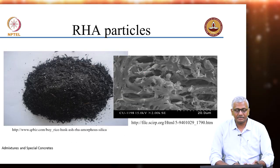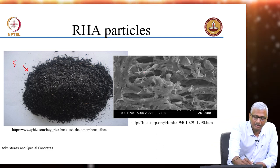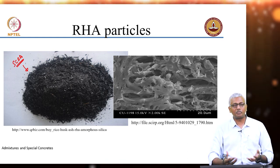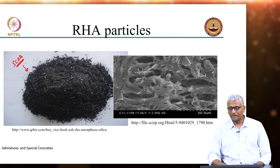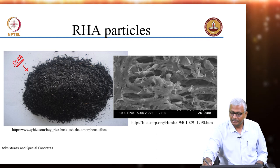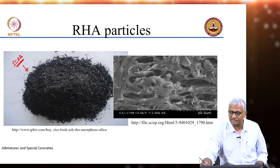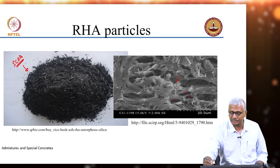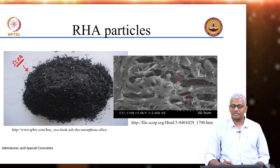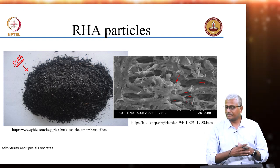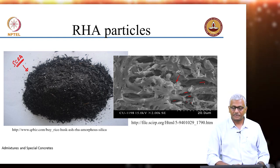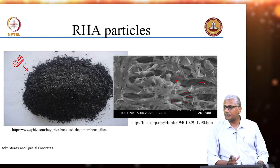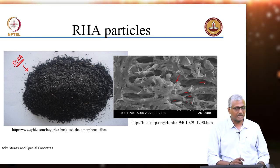You can see the rice husk ash particles. This photograph appears quite similar to bagasse ash — if somebody gave you two samples you probably would not be able to distinguish them easily. But when you start looking at the structure of the particles, at a scale of 20 microns you can see many vesicles and cavities inside — a highly cellular nature. You really do not see a solid particle but a very high surface present in these particles. Rice husk ash has a distinctly cellular nature as compared to the solid particles from other pozzolanic materials.